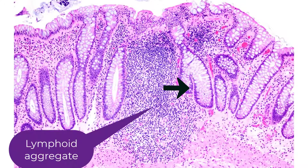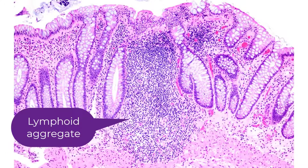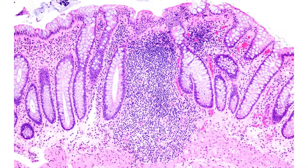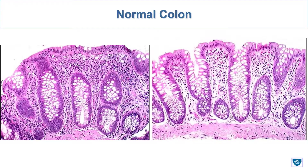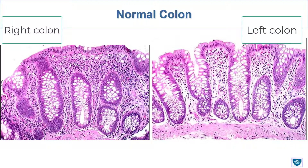Lymphoid aggregates typically distort the adjacent colonic mucosa. So once you have a lymphoid aggregate, you no longer see those test tubes lined up, running in parallel, and reaching the muscularis mucosae. And one final word: there is a difference between the right side of the colon and the left side of the colon. On the right side, you tend to see a lot more inflammatory cells. On the left side, particularly the rectum, you tend to see very, very few inflammatory cells. So there is a regional variation in the colon.